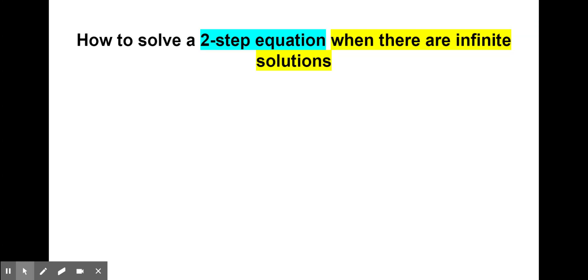Now that we've talked about how to solve a two-step equation when there is one solution and a two-step equation when there is no solution, let's go over how to solve a two-step equation when there are infinite solutions. Infinite solutions means that our variable — the letter in our equation — is equal to any number, and there are unlimited possibilities of what that number could be. Let's take a look at how to solve one of these examples.